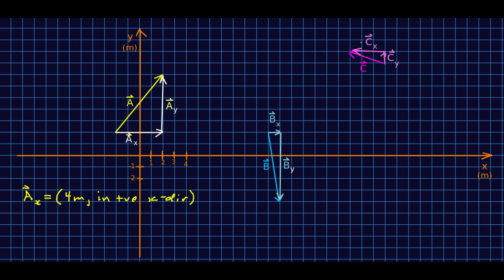There's another way to do this. I'm going to define a vector that points in the positive x direction and call it î — with a little hat on it — and that hat means this is a unit vector. It has magnitude one. Its partner ĵ is similar but points in the positive y direction. Whenever you see a hat on a symbol, that's telling you that symbol stands for a unit vector.